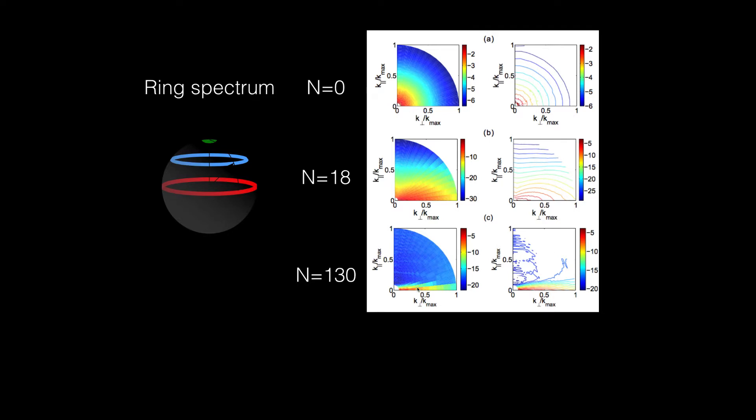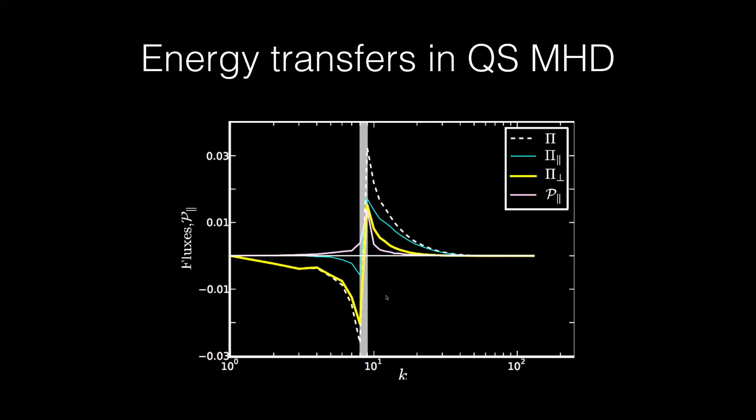Now, the question is, why does the flow become anisotropic? So, in the review, we discuss various energy transfers in QS-MHD turbulence.